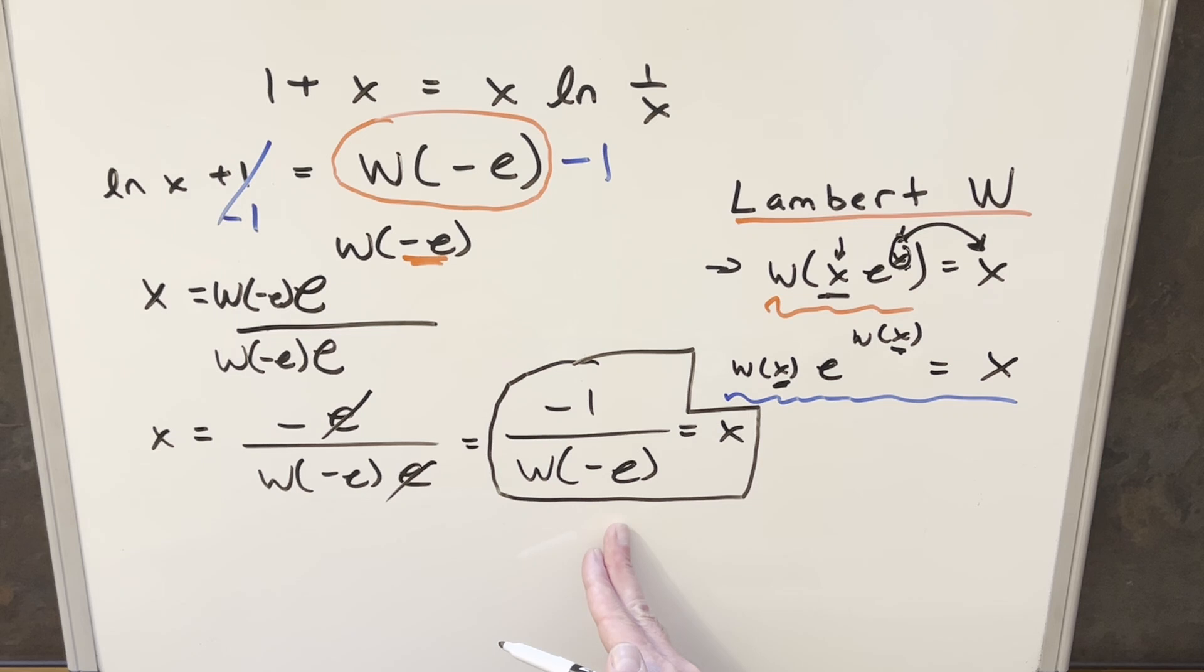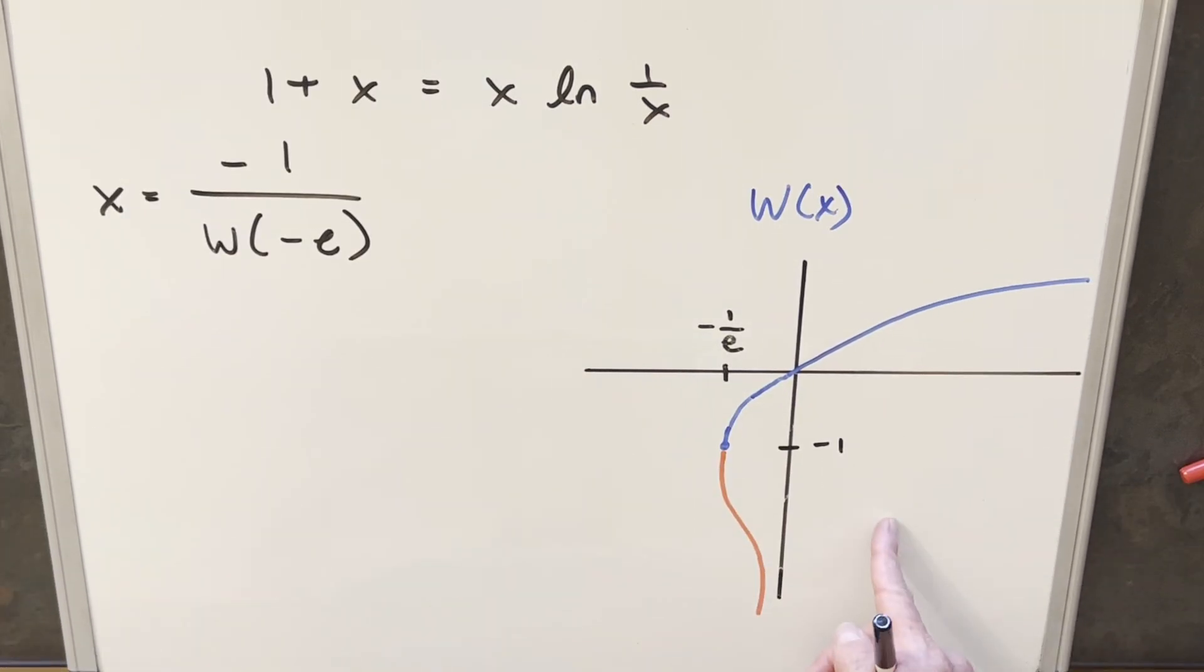Now what we want to do is we want to kind of evaluate this. We said originally that we want real solutions for this. And we'd kind of like to see some numeric values, not something in terms of Lambert W. So let's just take a look at the graph on this and see if we can get a little more information about this. Okay, now we have a rough sketch of the Lambert W function over here to the right.